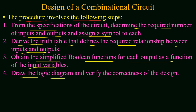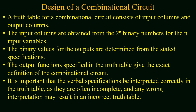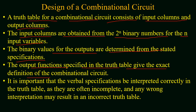In the last step you have to draw the logical diagram and verify the correctness of the design. The second step was about the construction of a truth table for the given combinational circuit, and this table will consist of input columns and output columns. If you have n binary variables at input then you will have 2^n binary combinations in the input column, and the binary values for the output are determined from the stated specification. It is important that the variable specification be interpreted correctly in the truth table, as they are often incomplete and any wrong interpretation may result in a wrong truth table, leading to an incorrect circuit design.